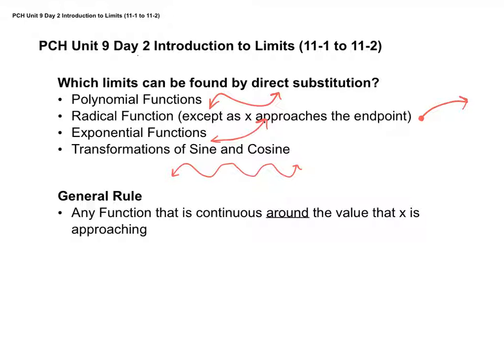It's not an asymptote — it's an endpoint. For radical functions, the concern is an endpoint, not a vertical asymptote.